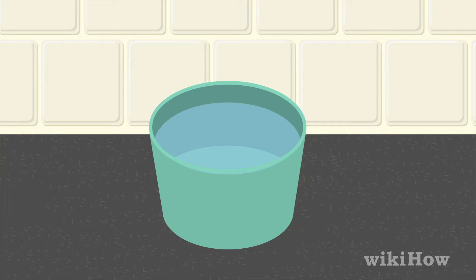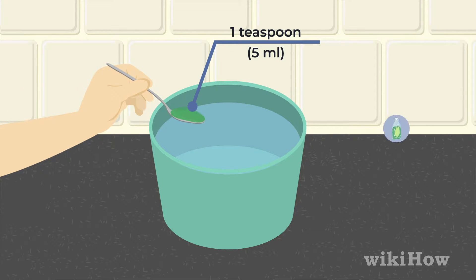You can also make a cleaning solution with one quart, 0.94 liters of warm water, and one teaspoon, 5 milliliters of dish detergent.